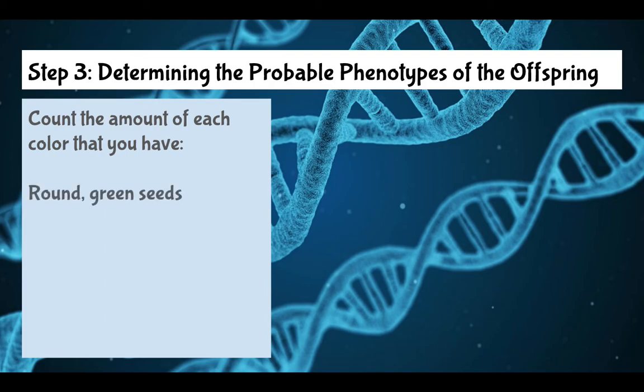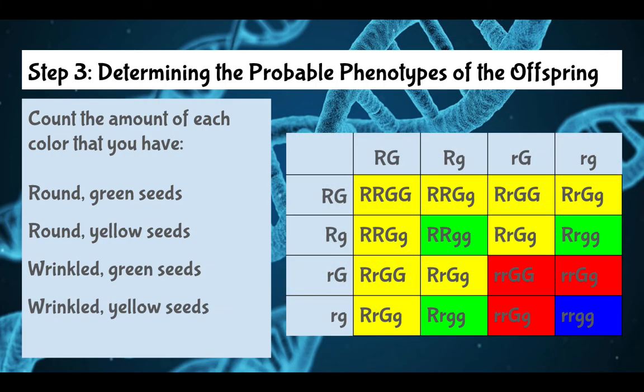Now we are going to count the amount of each color that we have. We're going to list out our four genotypes again and pull in our Punnett square, our dihybrid over here. You're going to just count the color. You have nine that are yellow, three that are green, three that are red, and one that is blue.